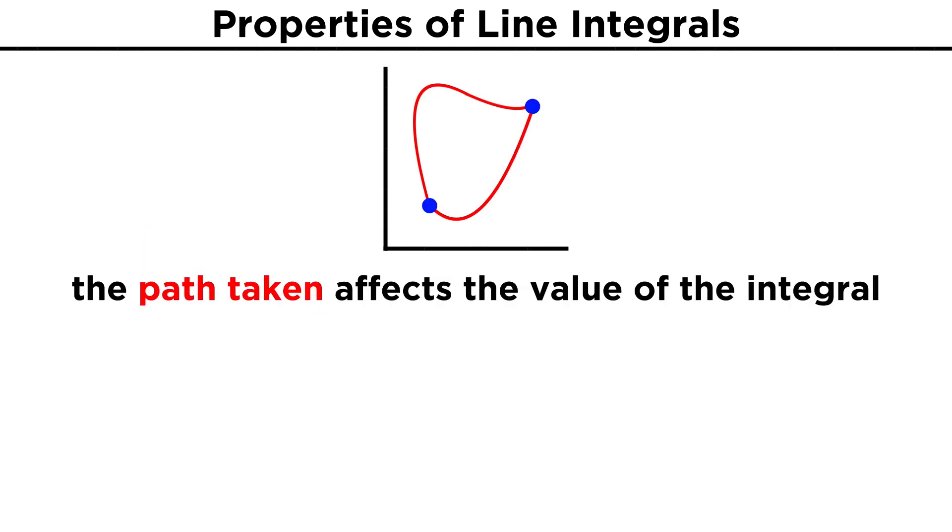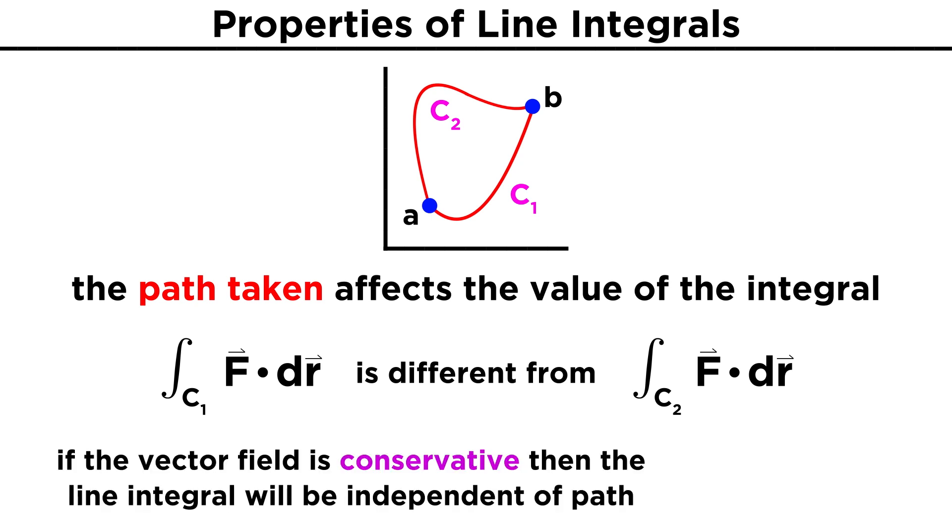An important thing to note about line integrals is that in most cases, the path taken affects the answer. That is, even with the same starting and ending points A and B, the line integral over different paths can yield different answers. There is an exception that will cause line integrals to be independent of paths, and this is when the vector field f is conservative.